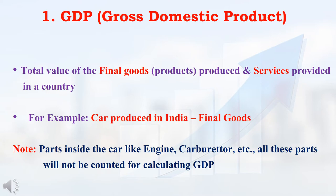For example, in India, if one car is produced, that car will be considered as the final product. Inside that car, many parts will be available, like engine, carburetor — many parts will be available inside that car. But these parts will not be considered as final products, and these parts will not be considered for calculating GDP. Only the car will be considered as the final product, and that car will be considered for calculating GDP.